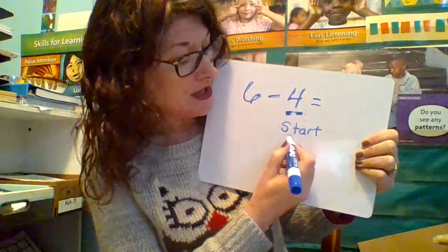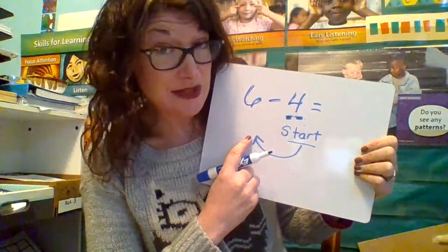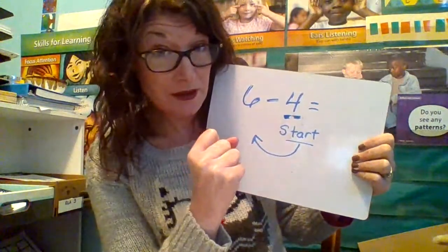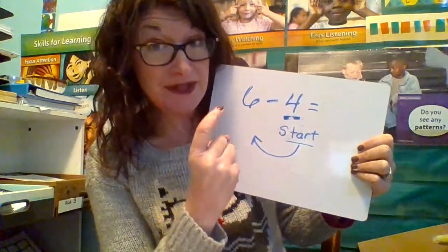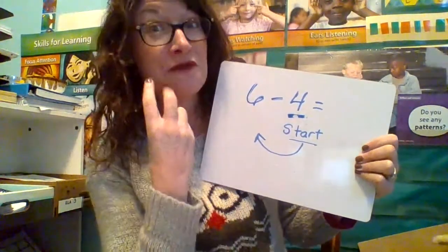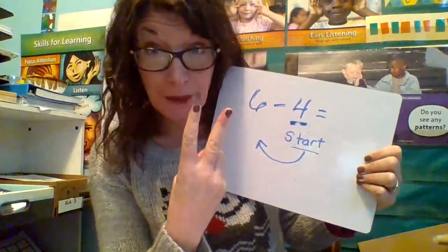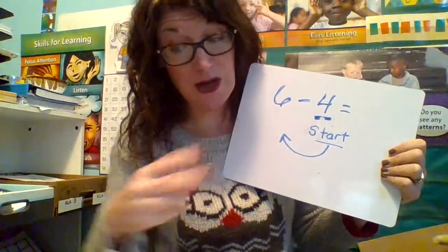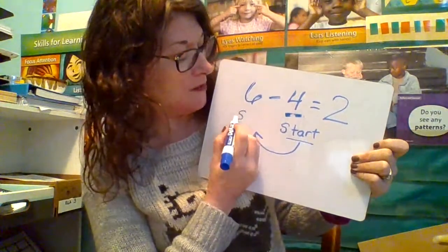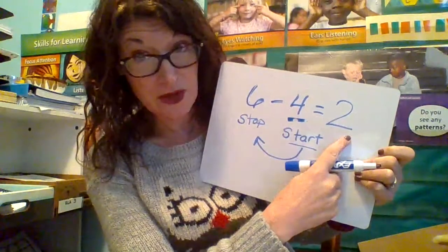We're going to start here and go in this direction, using the same counting on strategy we did in addition. So let's grab number 4 with our hand — 4 — and then we're going to count up until we get to 6. 4... 5, 6. And I ended up with 2. And 2 is going to be my difference for this subtraction problem. So we always stop when we get to the first number, and whatever count we end up at, we write it as the answer.